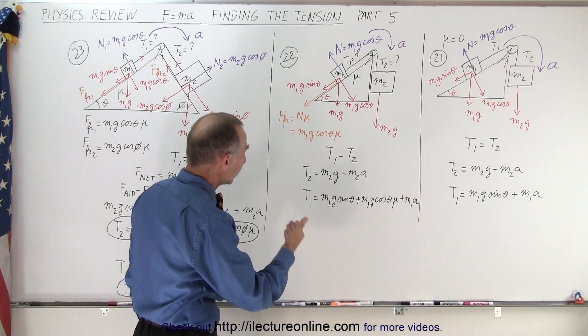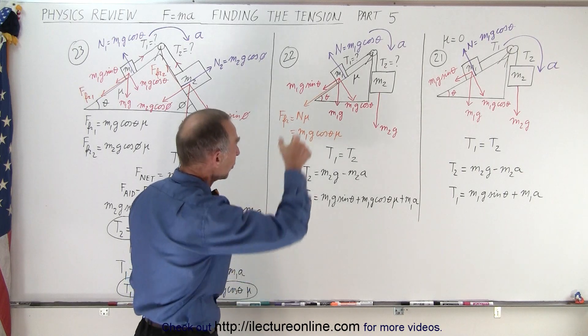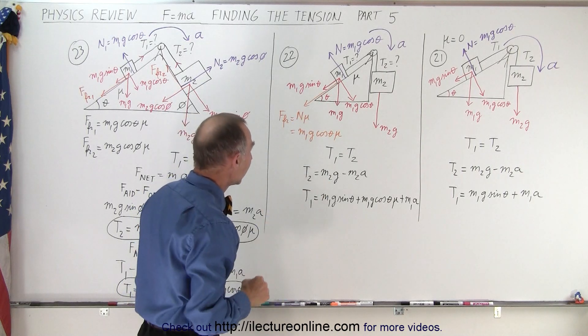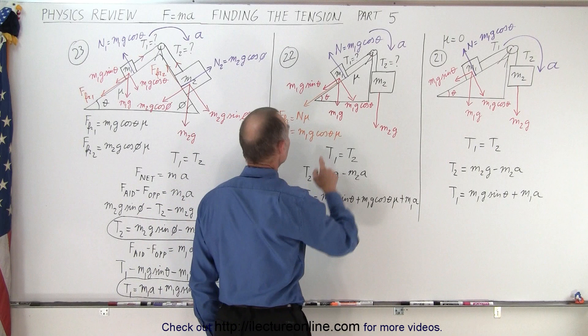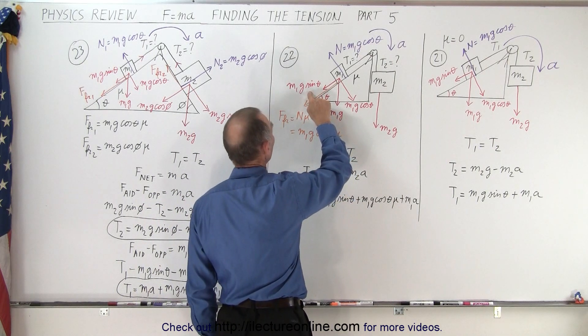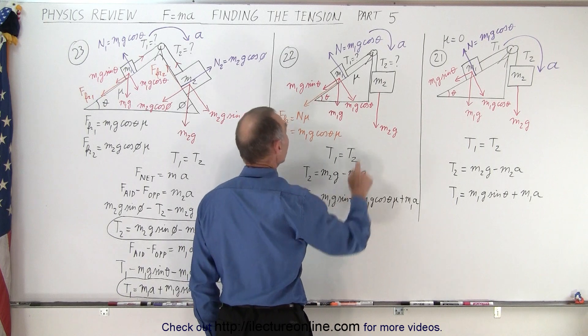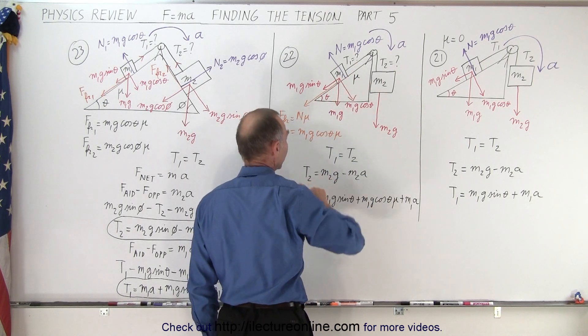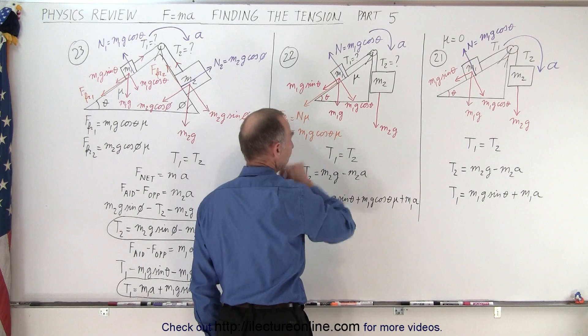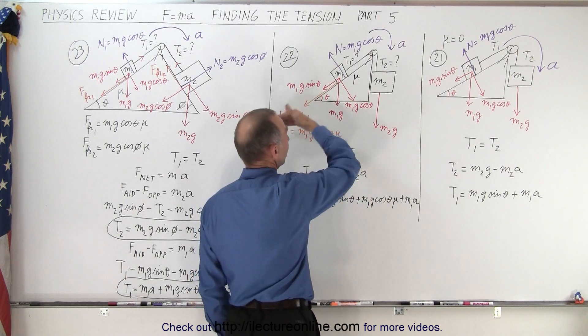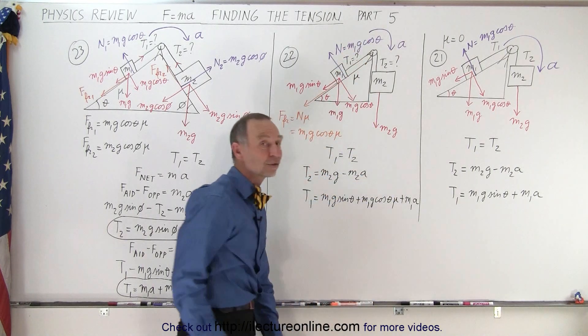So therefore you could say that T2 will be M2G minus M2A because it's accelerating downward. And T1 will be equal to the component of the weight along the incline, which is M1G sine theta, plus the force required to overcome the friction, which in this case is going to be M1G cosine theta mu, plus the force required to accelerate M1 against gravity.